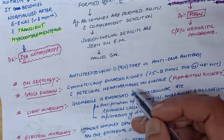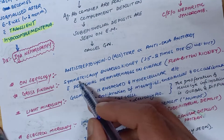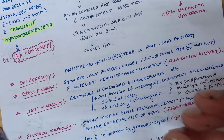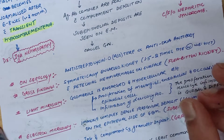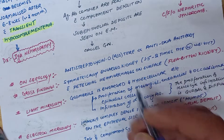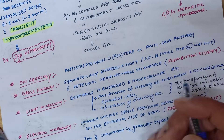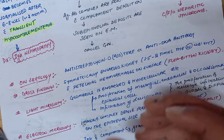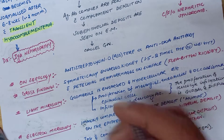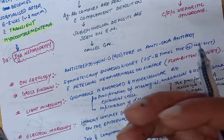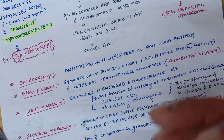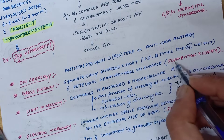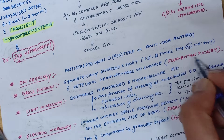In gross findings, we'll see a symmetrically enlarged kidney. The kidney will be enlarged 1.5 to 2 times the normal weight, with petechial hemorrhage on the surface. It will appear as a flea-bitten kidney.